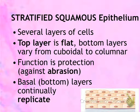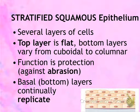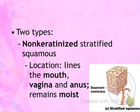Functions of the stratified squamous epithelium include protection against scratches and abrasions. The basal layer, which is the basement membrane, has cells that are continually making new cells and replacing the ones lost at the apical surface. There are two types: non-keratinized stratified squamous, found in moist areas like the mouth, the lining of the vagina, and the anus.